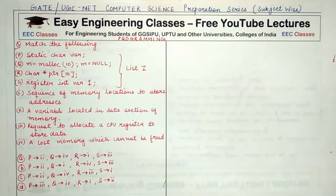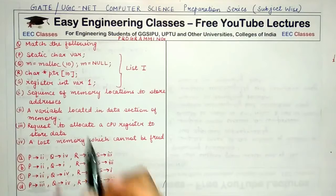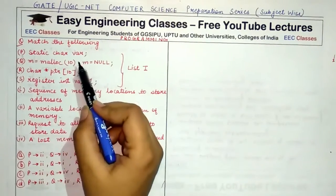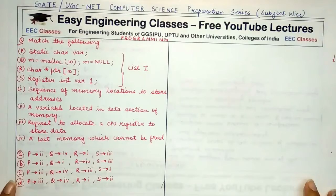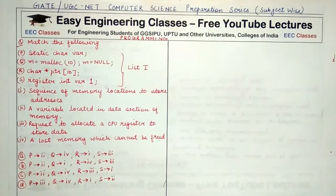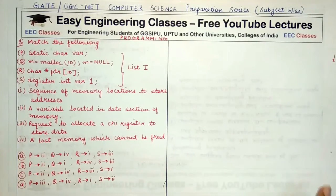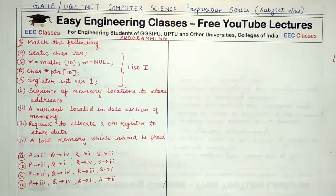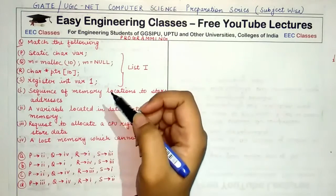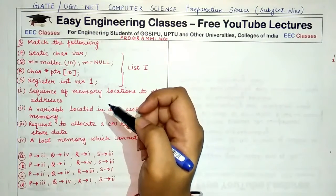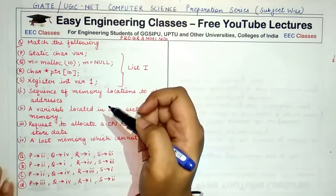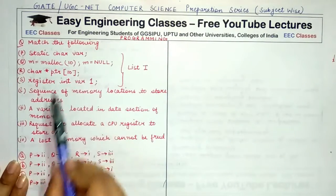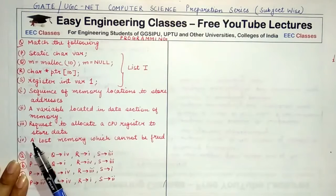When we write static char var, it creates a character variable named var that is static in nature. Static means it preserves its value within function calls — if initialized once, it retains its value every time a function uses this variable.